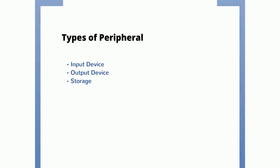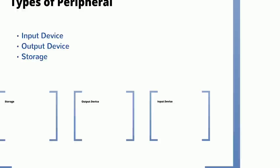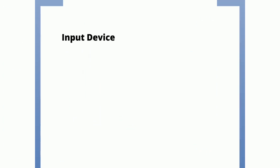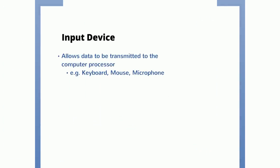We've got different types of peripheral: input devices, output devices, and storage devices. For input devices, this allows data to be transmitted to the computer processor. So keyboard, mouse, and microphone are all examples of input devices.